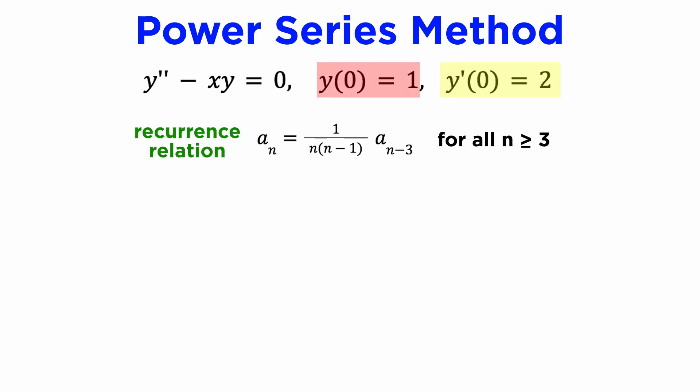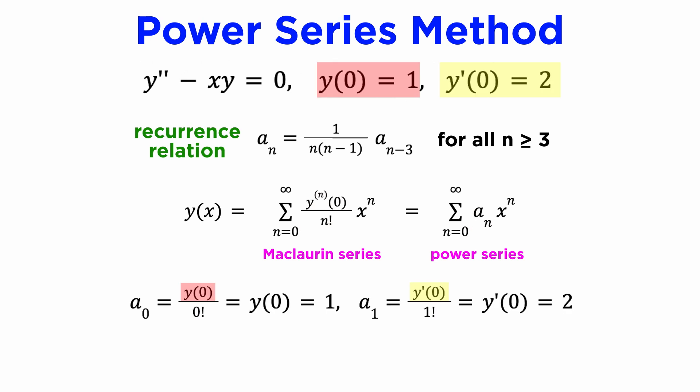It's now time to use our initial conditions. If we compare our power series coefficient a_n to the coefficients in the Maclaurin series for y, we see that a_n is the same as the nth derivative of y at x equals zero, divided by n factorial, since this is the coefficient of x to the n in the Maclaurin series definition. Since we know y(0) and y'(0) from the initial conditions, we can find a_0 and a_1, and we get a_0 equals one and a_1 equals two. Recall from earlier that we also managed to find a_2 equals zero, so we can use these starting values to iterate through our sequence a_n using the recurrence relation we found.